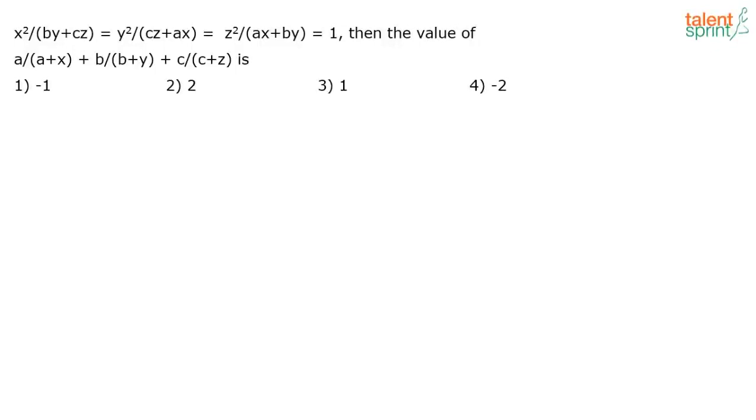x squared by by plus cz. Look at this. It says x squared upon by plus cz equals to y squared upon cz plus ax equals z squared by ax plus by. Until now it was okay. I think the challenge comes here when it says it is equal to 1. Now balancing all this to 1, equating all this to 1 makes it a little complicated. So anyway x squared equals to by plus cz. Sorry x squared by by plus cz equals to y squared by cz plus ax equals to z squared by ax plus by equals 1.